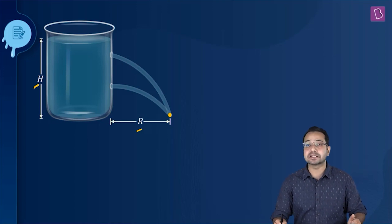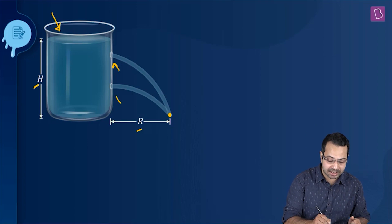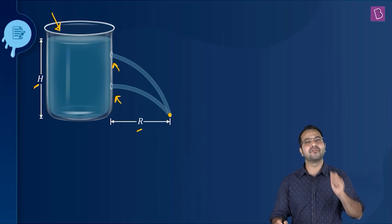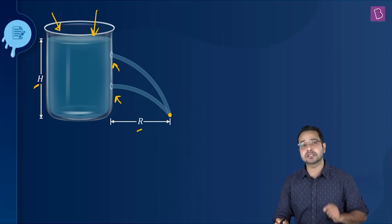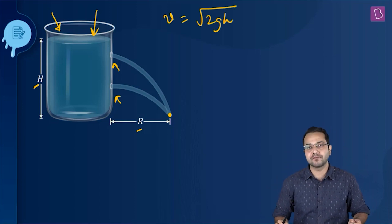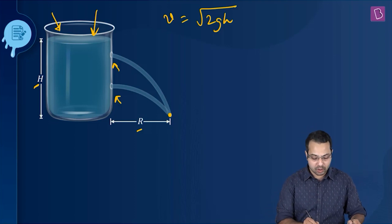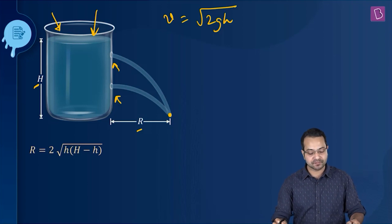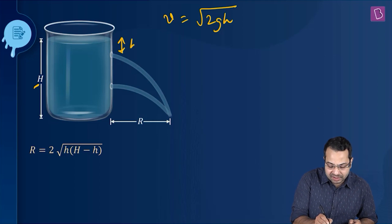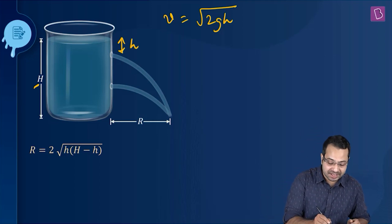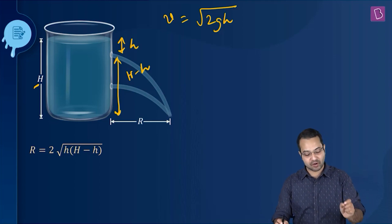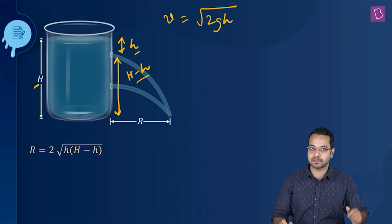It is an open vessel, which means the pressure at the surface and the pressure at the holes is going to be the same — criterion one is met. The holes have an area which is very small compared to the cross section of the vessel, which means Torricelli's law is valid and the speed of efflux can be safely assumed to be √(2gh). Under these assumptions, the range is equal to 2√(h · (H − h)), where small h is the depth below the liquid surface and H − h is the height of the orifice above the bottom of the vessel.